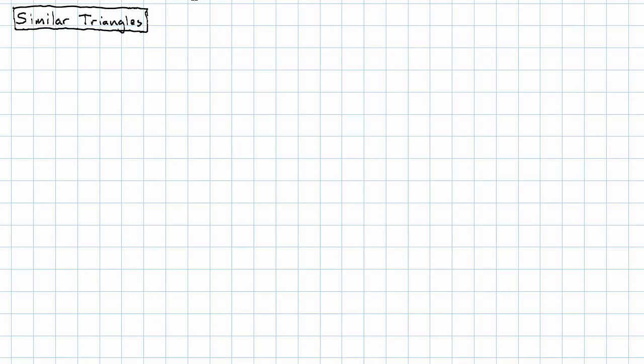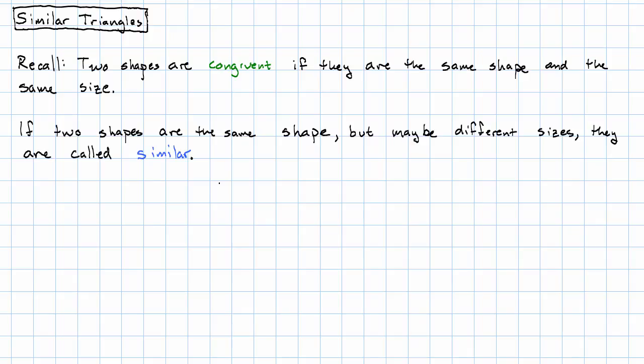Recall that two shapes are congruent if they are the same shape and the same size. If two shapes are the same shape but may be different sizes, they're called similar.